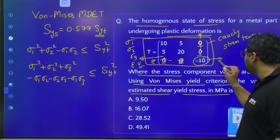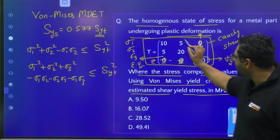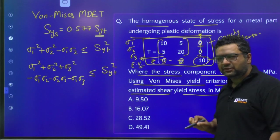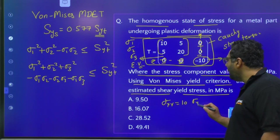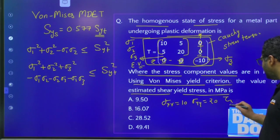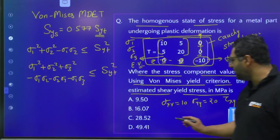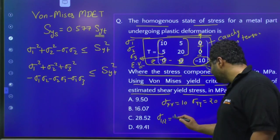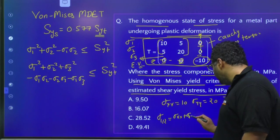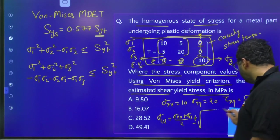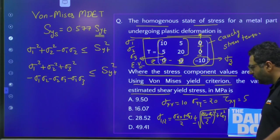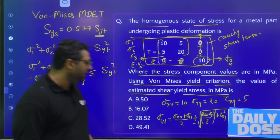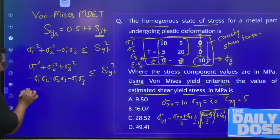So this −10 will directly become σ3. Now we can consider the remaining 2×2 matrix to find the other principal stresses. We have σxx = 10, σyy = 20, and τxy = 5. We apply the formula: σ1,2 = (σxx + σyy)/2 ± √[((σxx − σyy)/2)² + τxy²].